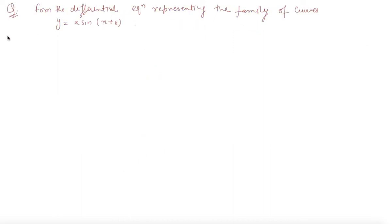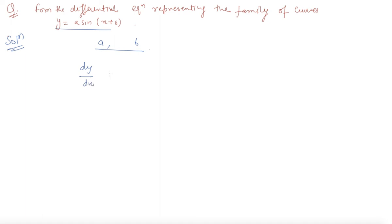Here is question number two, which states: form the differential equation representing the family of curves, where a and b are some arbitrary constants and we need to form a differential equation without these arbitrary constants. There are two arbitrary constants, so we need to differentiate this equation two times. Differentiating, dy/dx = a·cos(x + b).